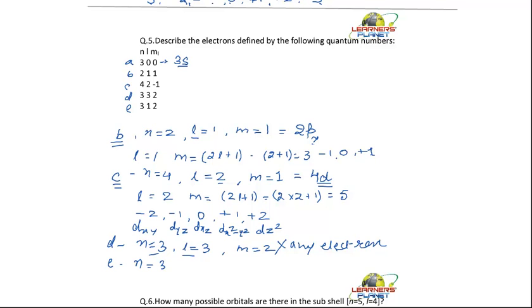Our next is, N is equal to 3, L is equal to 1, and M is equal to 2. Is it the correct explanation? Or is it the right thing? For L is equal to 1, M can have how many values? M can have 3 values, minus 1, 0 and plus 1. So, this is also not defining any of the electrons.